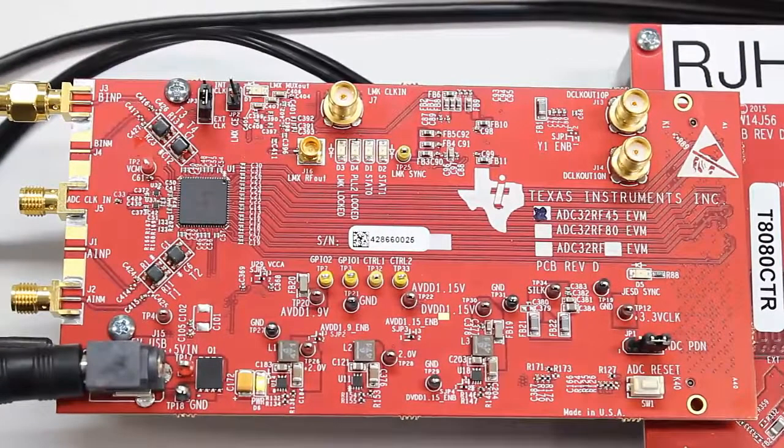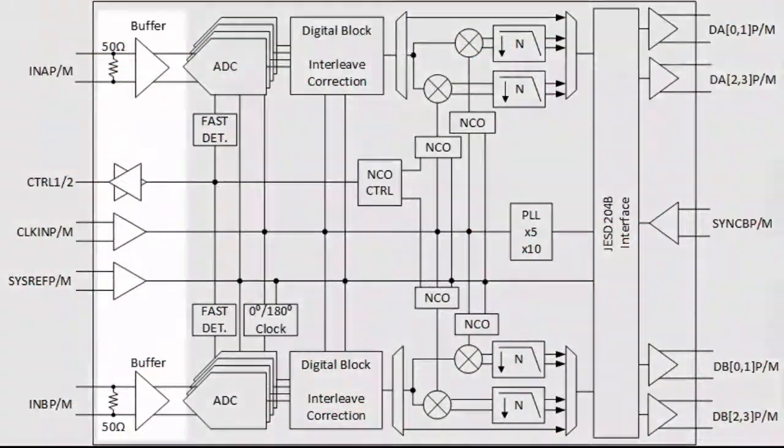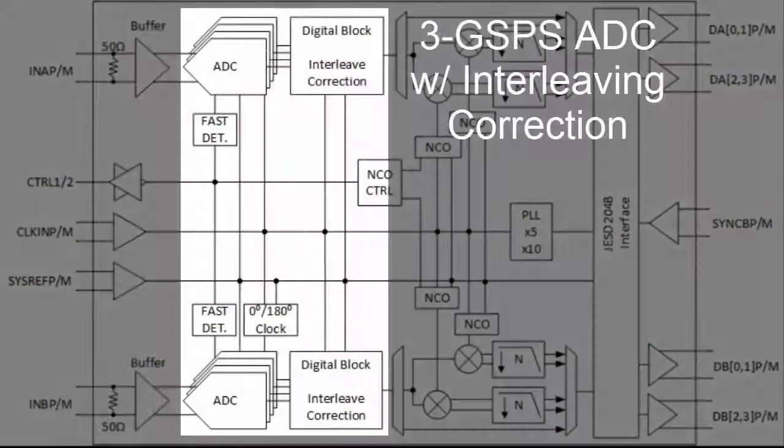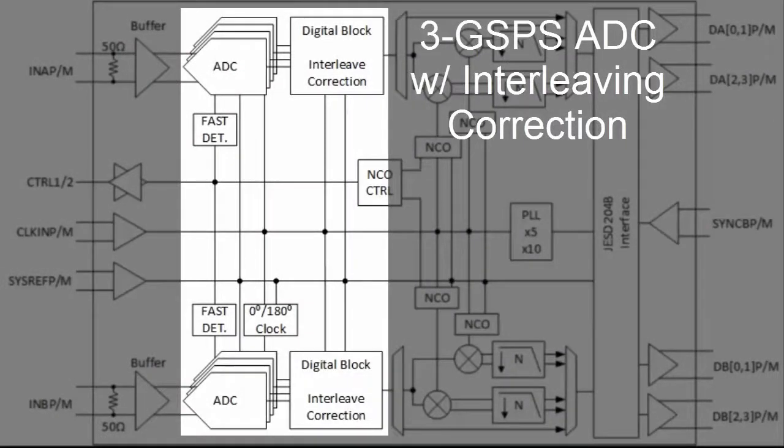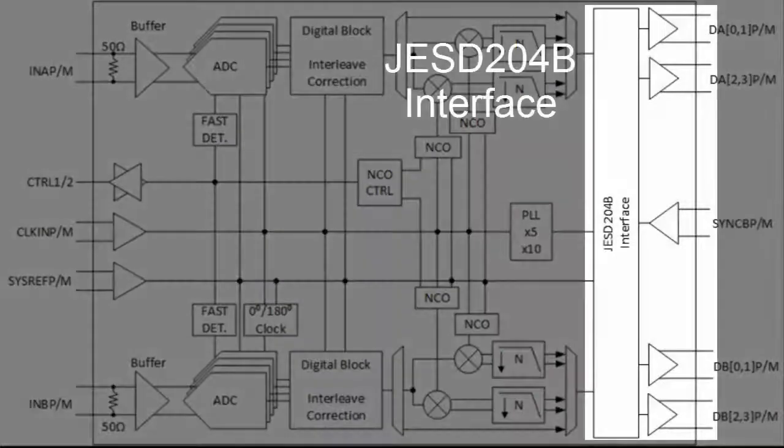Let's take a closer look inside the device. It has a 3 dB input bandwidth at 3 GHz. It's an interleaved ADC with integrated interleaved correction. You can go to bypass mode, in which you can use the full Nyquist zone bandwidth. Or, as an option, you can use the dual DDCs with decimation filters and integrated NCOs, and a JESD204B interface.